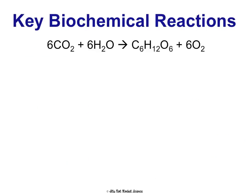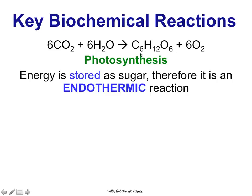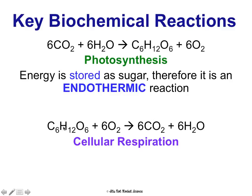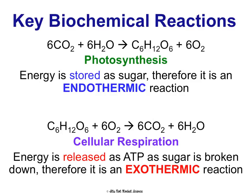These two biochemical reactions — photosynthesis and cellular respiration — we're going to talk about so much in this unit. For now, just be able to recognize them. Photosynthesis: six carbon dioxides plus six waters are your reactants; we produce glucose (C6H12O6) and six oxygen molecules. It's endothermic because we're absorbing energy from the sun and storing it in sugar. Cellular respiration: glucose plus six oxygens makes six carbon dioxide and six waters. Energy is released as ATP when the sugar is broken down, making it an exothermic reaction.